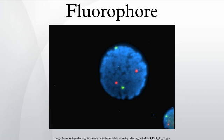Acridine derivatives include proflavin, acridine orange, and acridine yellow. Arylmethine derivatives include auramine, crystal violet, and malachite green. Tetrapyrrole derivatives include porphine, phthalocyanine, and bilirubin. These fluorophores fluoresce thanks to delocalized electrons.